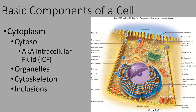First, there's something called the cytosol. Inside the cell there's a lot of liquid, kind of like water but it's not. That liquid is called the cytosol — the cytosol is the liquid portion of the cytoplasm. Some other words that mean the same thing are ICF, or intracellular fluid. The intracellular fluid, or ICF, is the same thing as the cytosol — just the liquid portion of the cytoplasm.